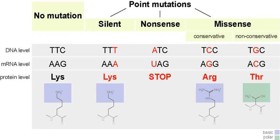Point mutations usually take place during DNA replication. DNA replication occurs when one double-stranded DNA molecule creates two single strands of DNA, each of which is a template for the creation of the complementary strand. A single point mutation can change the whole DNA sequence, as changing one purine or pyrimidine may change the amino acid that the nucleotides code for.